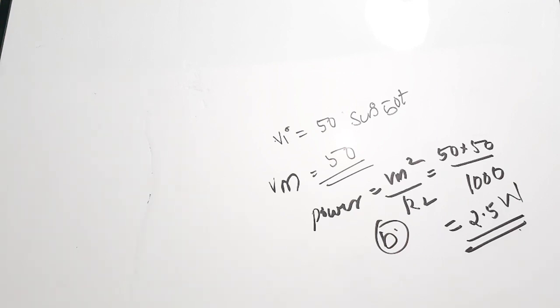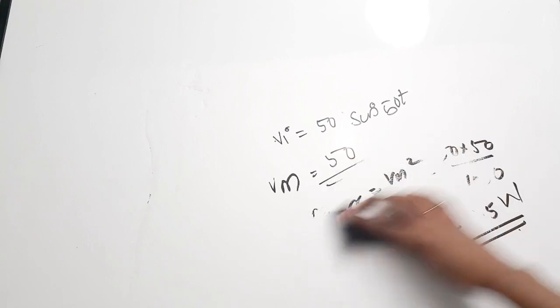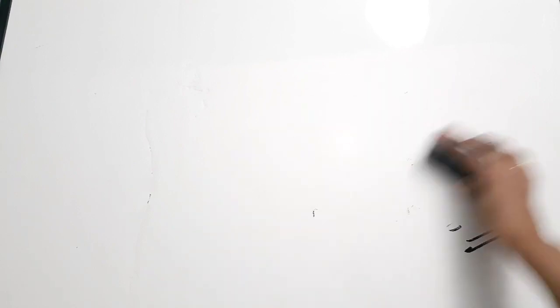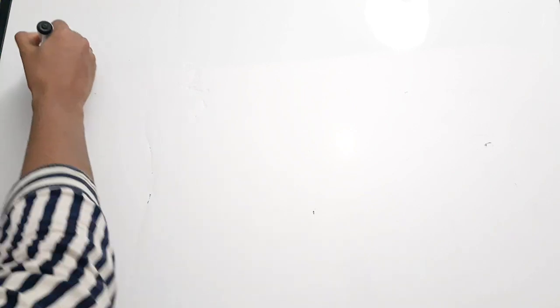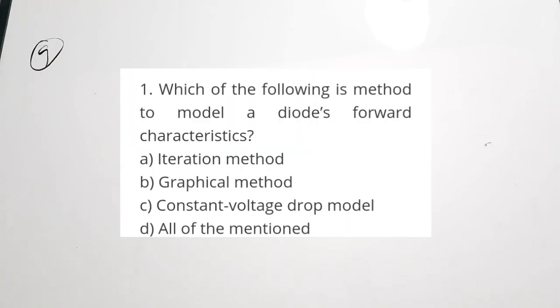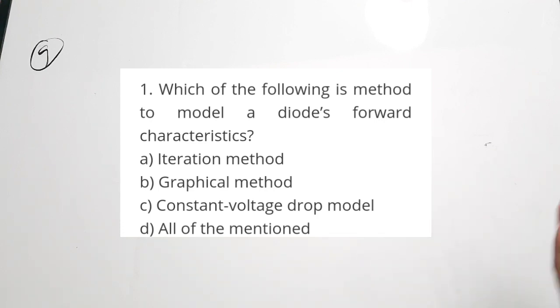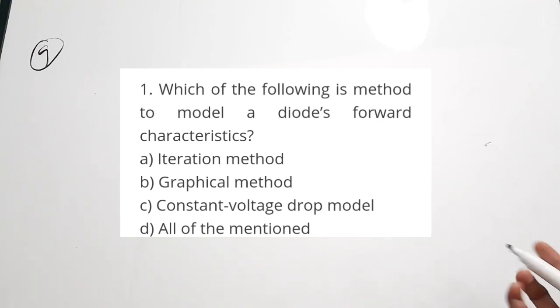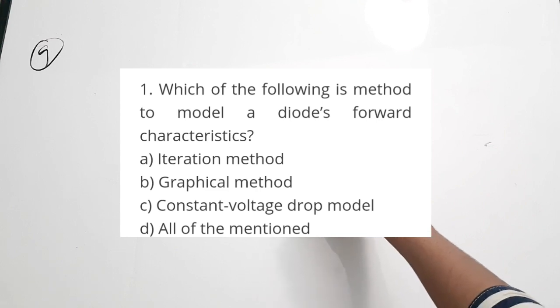The ninth question: which of the following is a method used to model diode forward characteristics? A, iteration method; B, graphical method; C, constant voltage drop model; D, all of the above. All these methods can be used to depict the forward I-V characteristics of a diode. The correct answer is D, all of the above.